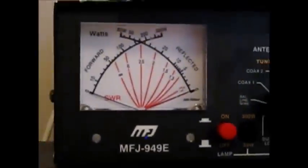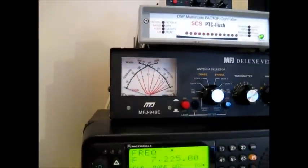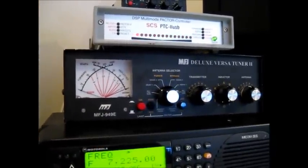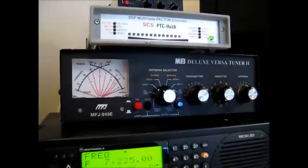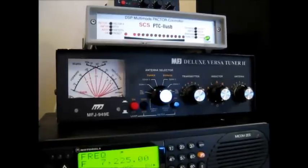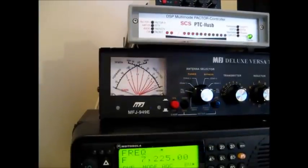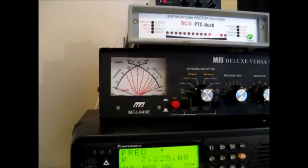So again, this is just a recap. It's an MFJ949E. I think this is a 300 watt tuner with two coax inputs on the back so you can have more than one antenna. It's a manual tuner and I think they run about 150 bucks but there's many other brands out there. I'm not doing a product endorsement here.